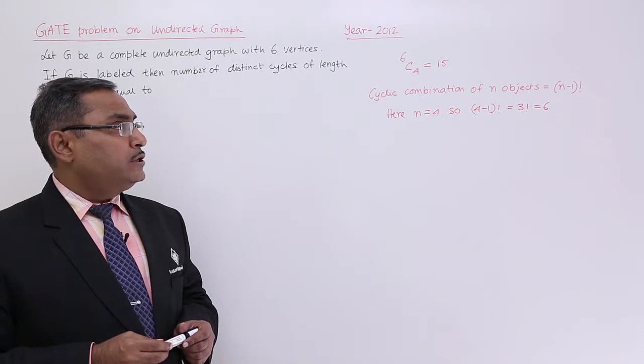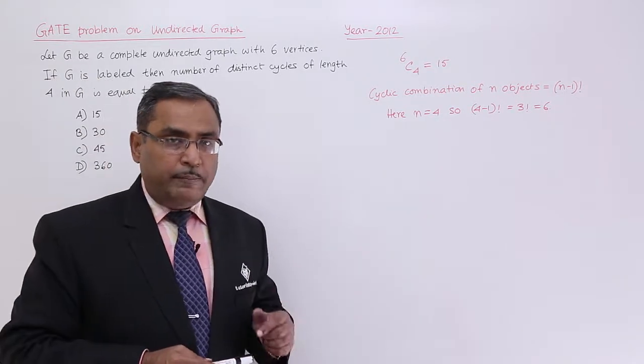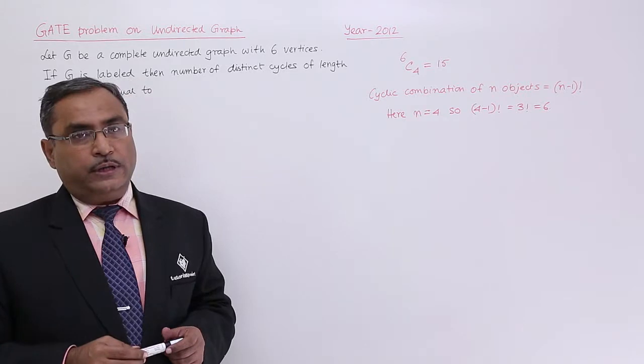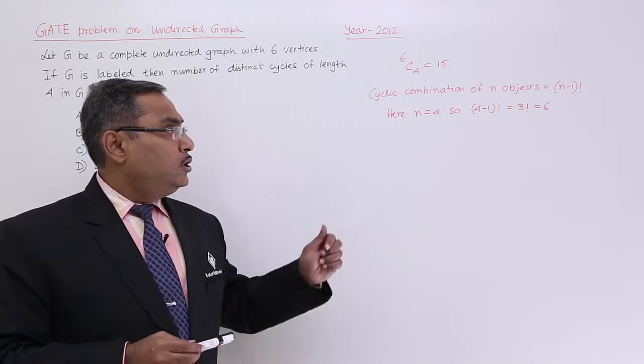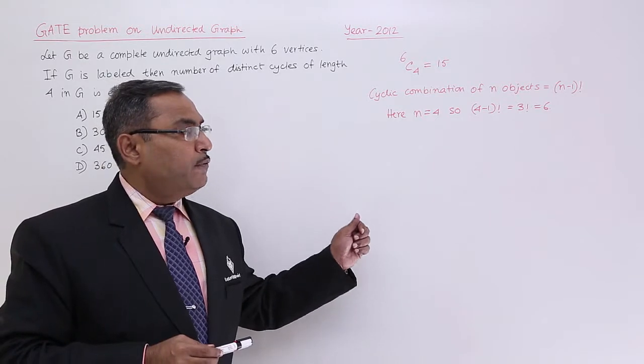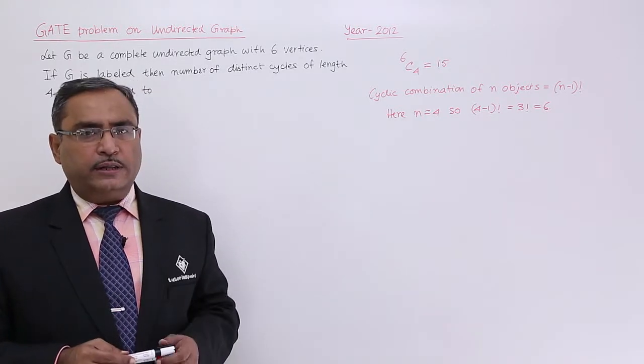The cyclic combination of n objects is (n-1) factorial. Here we are having cyclic combination of 4 objects, so it will be 4 minus 1 factorial, that is 3 factorial, and that is 6.